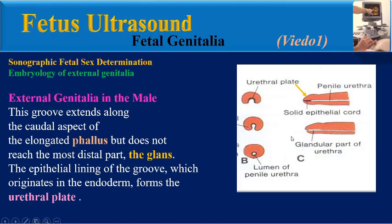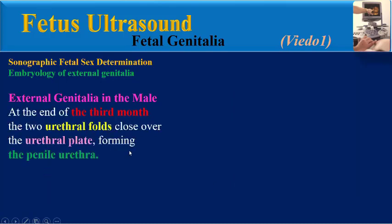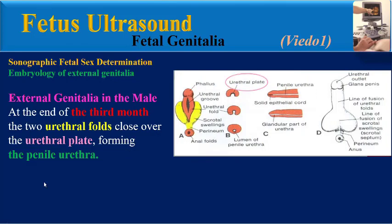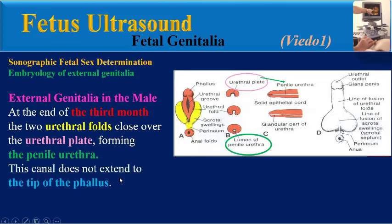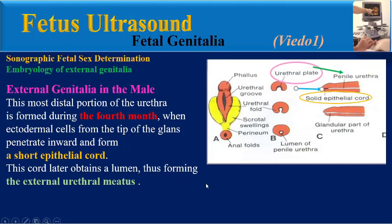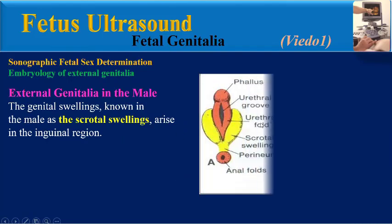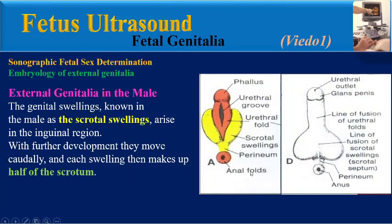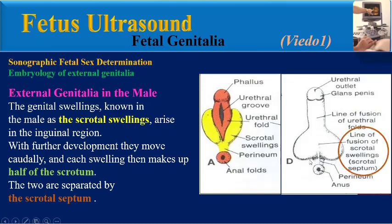The epithelial lining of the groove, originating from the endoderm, forms the urethral plate. At the end of the third month, the two urethral folds close over the urethral plate, forming the penile urethra. This canal does not extend to the tip of the phallus. The most distal portion of the urethra is formed during the fourth month, when ectodermal cells from the tip of the glans penetrate inward and form a short epithelial cord, which later obtains a lumen, forming the external urethral meatus. The genital swellings, known as scrotal swellings in the male, arise in the inguinal region, move caudally, and each makes up half of the scrotum, with the two hemiscrotums separated by the scrotal septum.